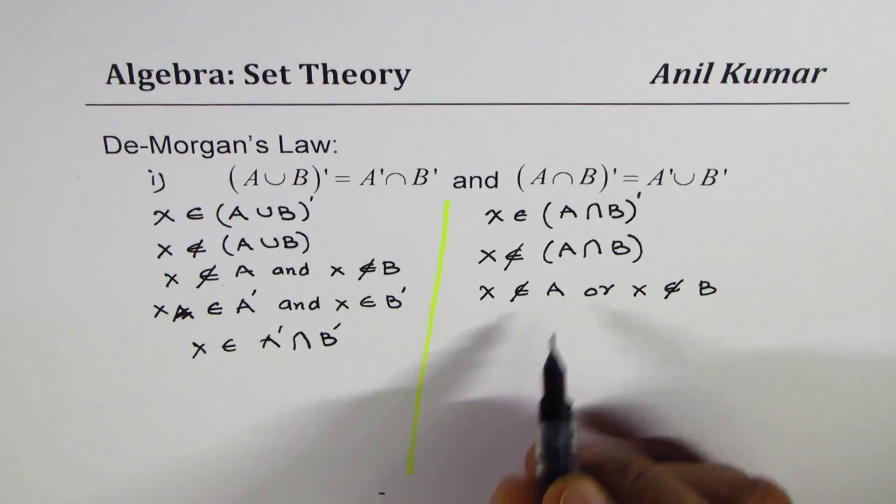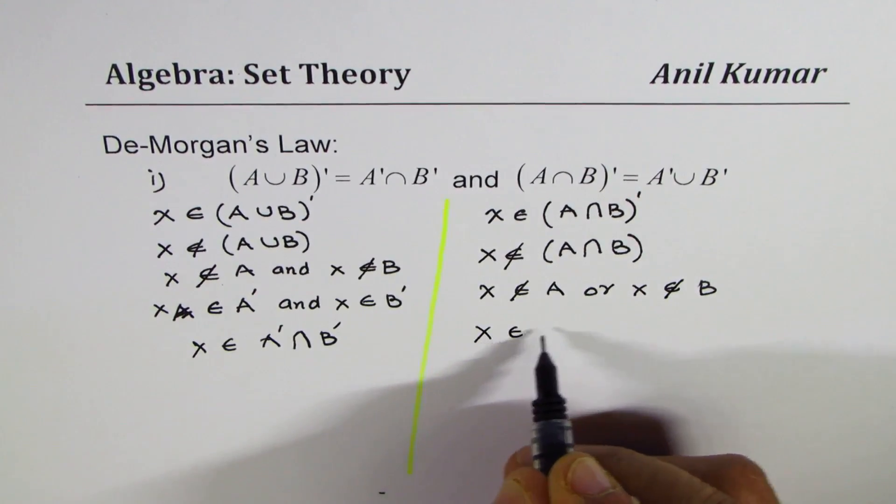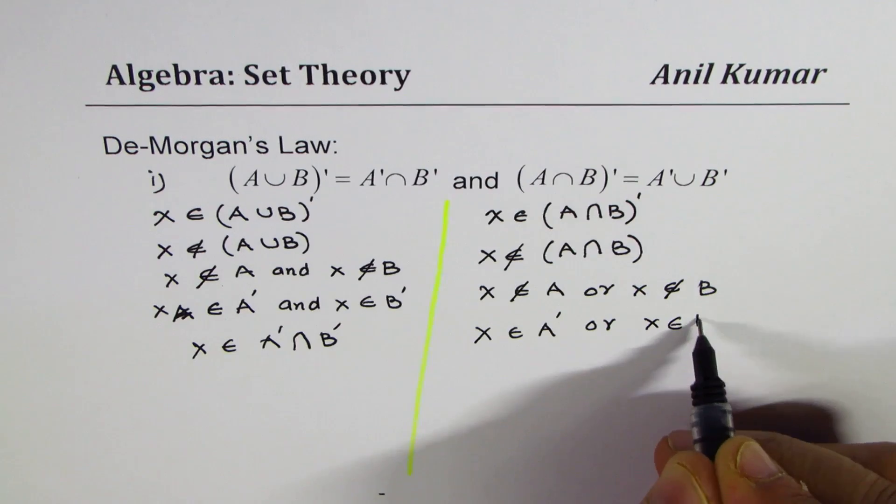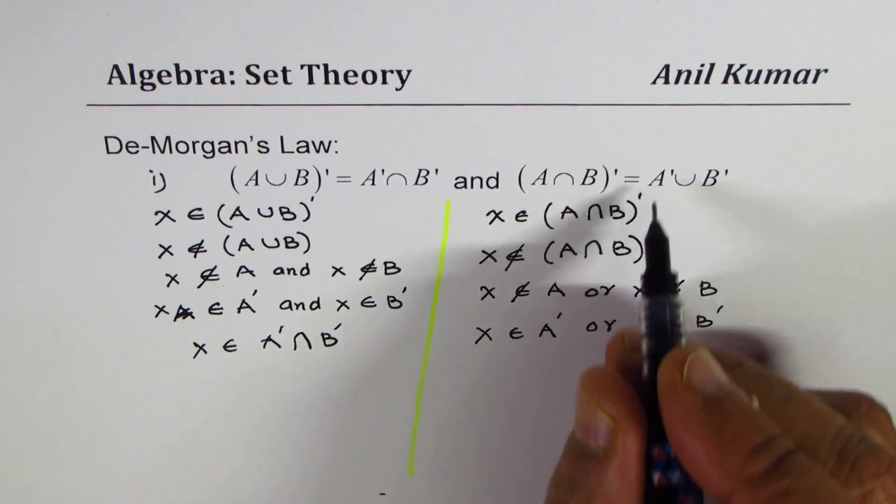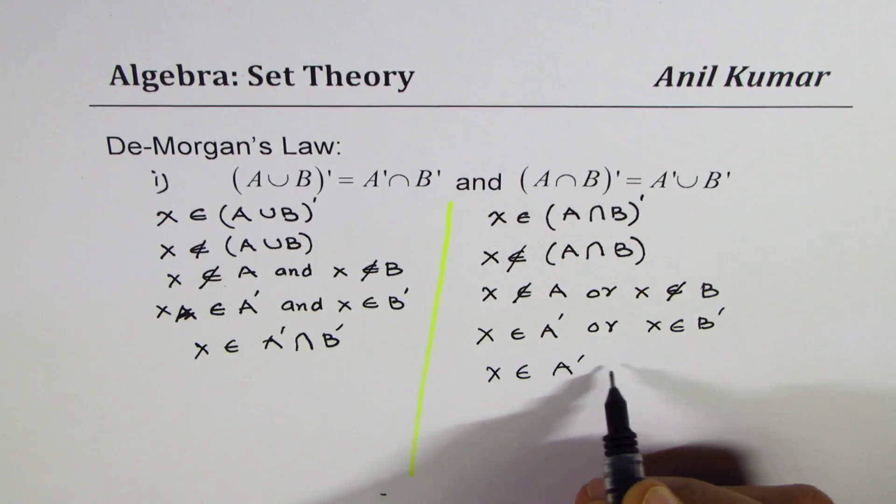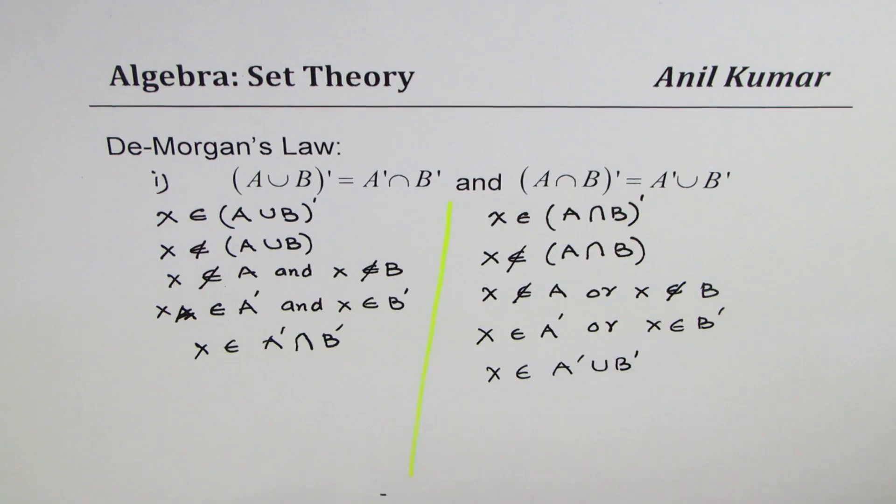If it does not belong to A, then x should belong to complement of A or x should belong to complement of B. And that gives us x belongs to A complement union B complement.